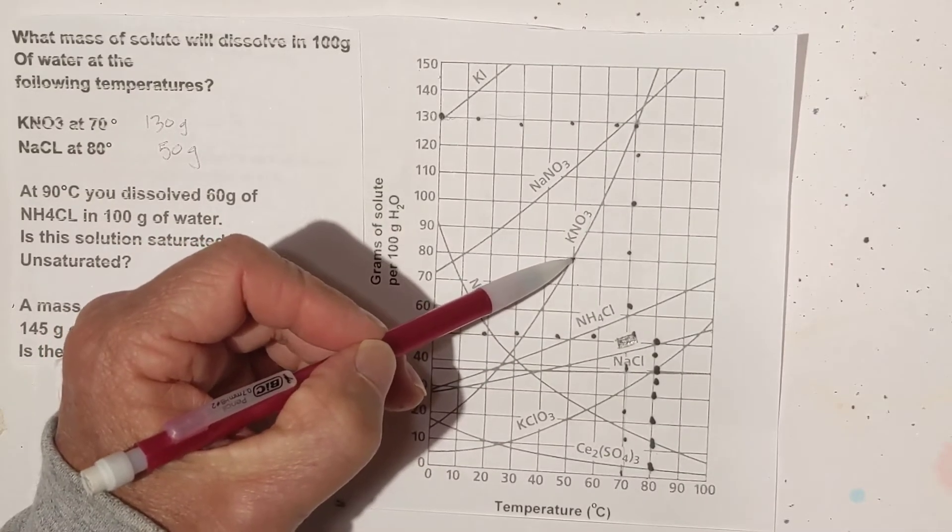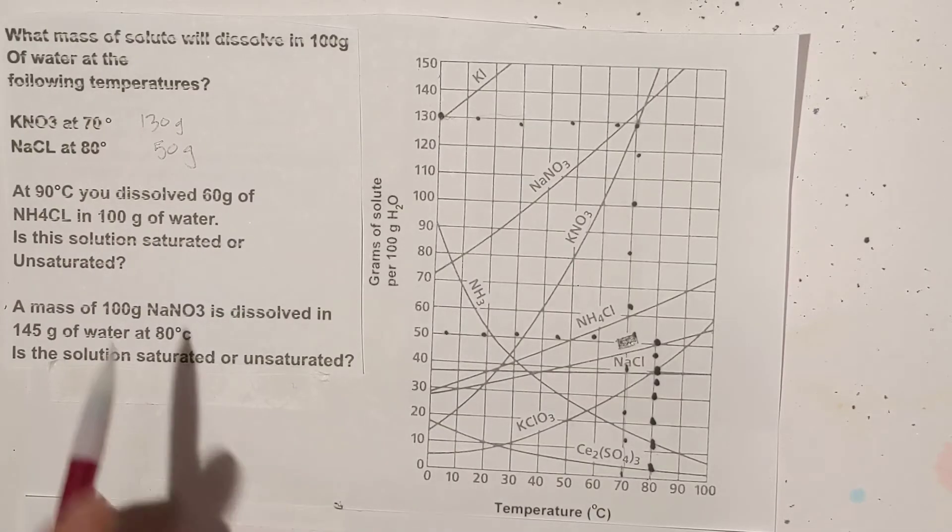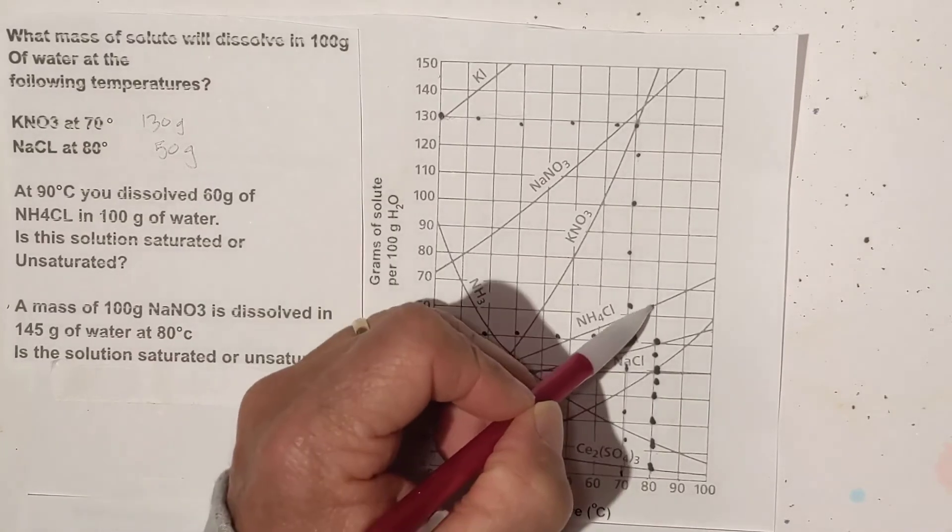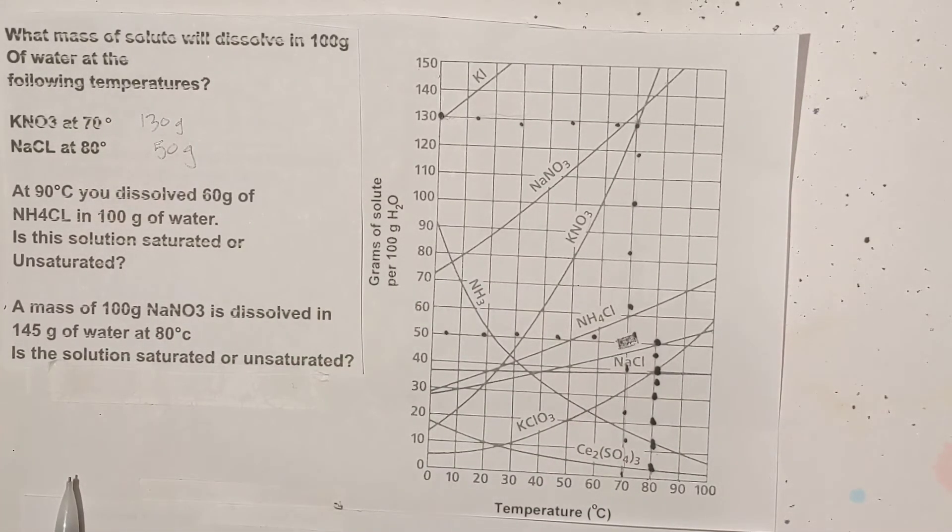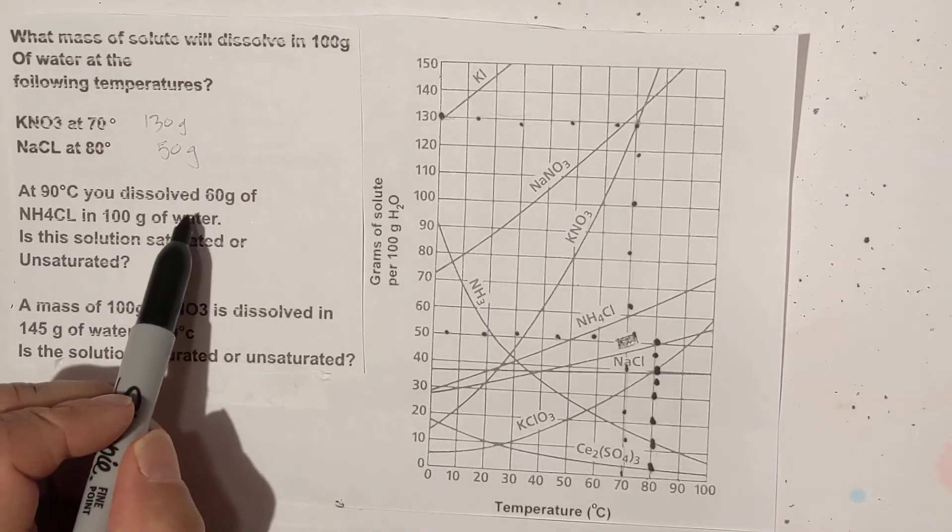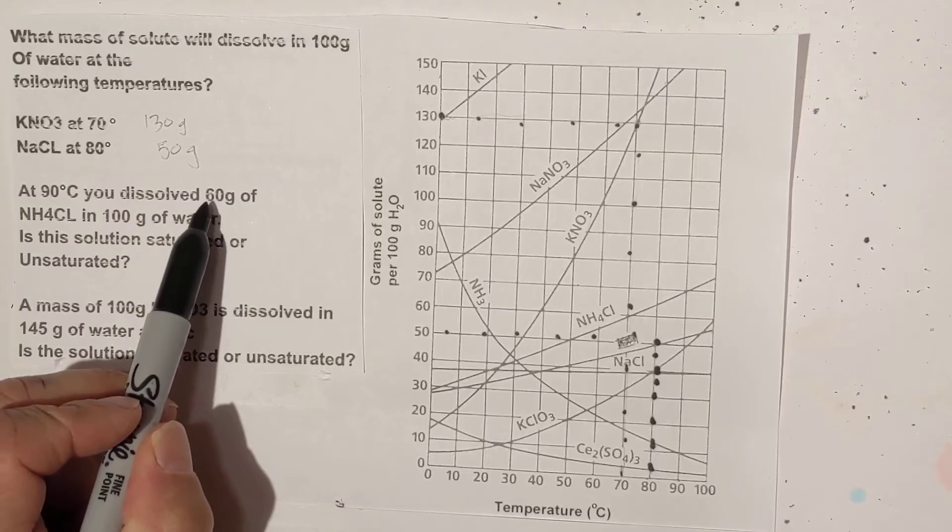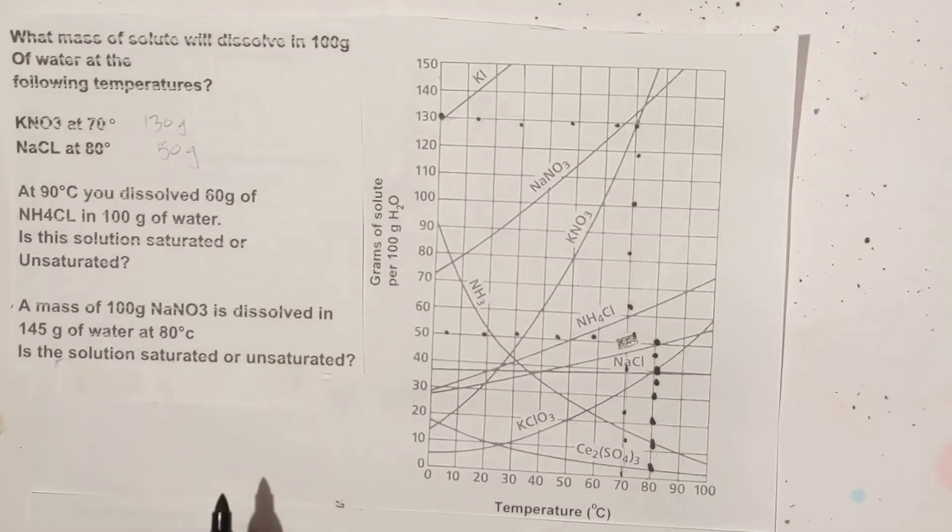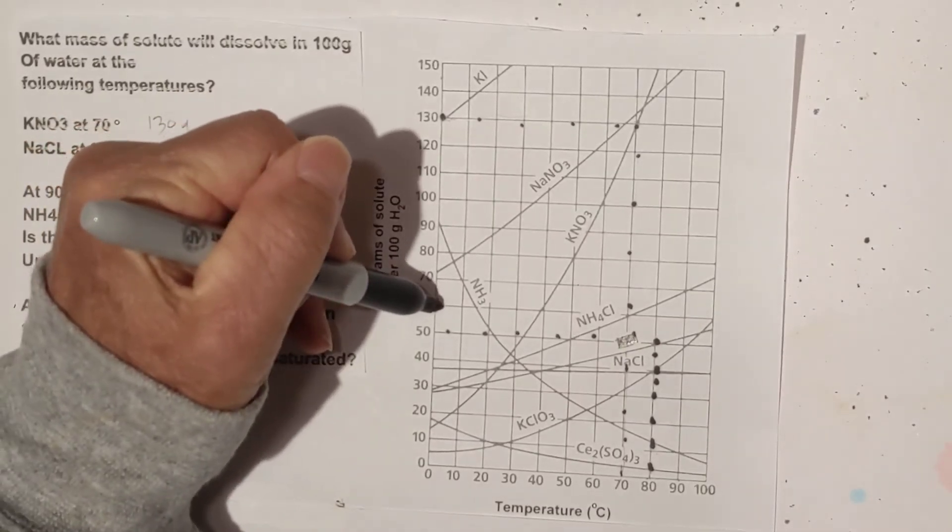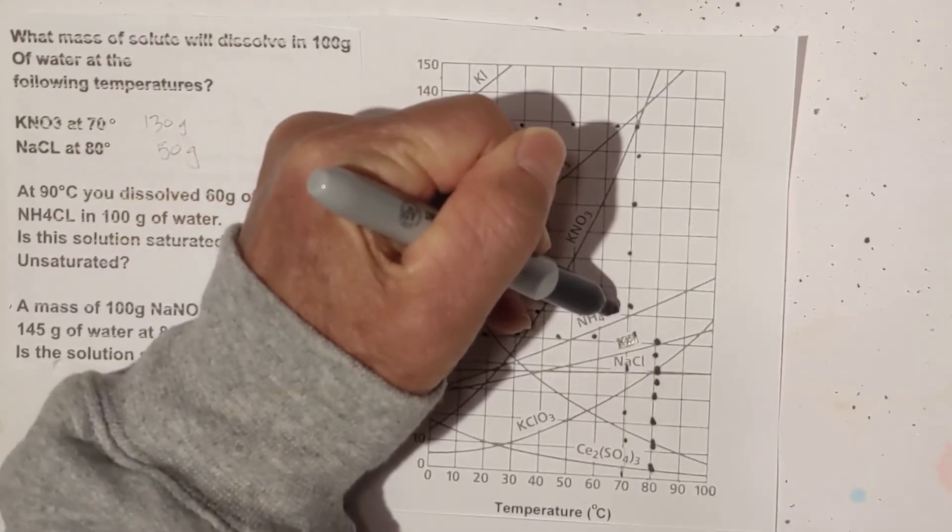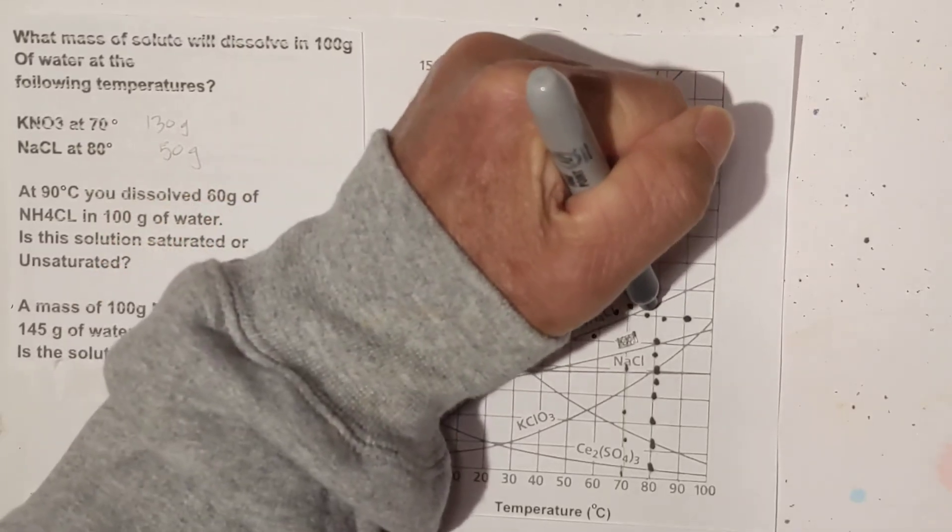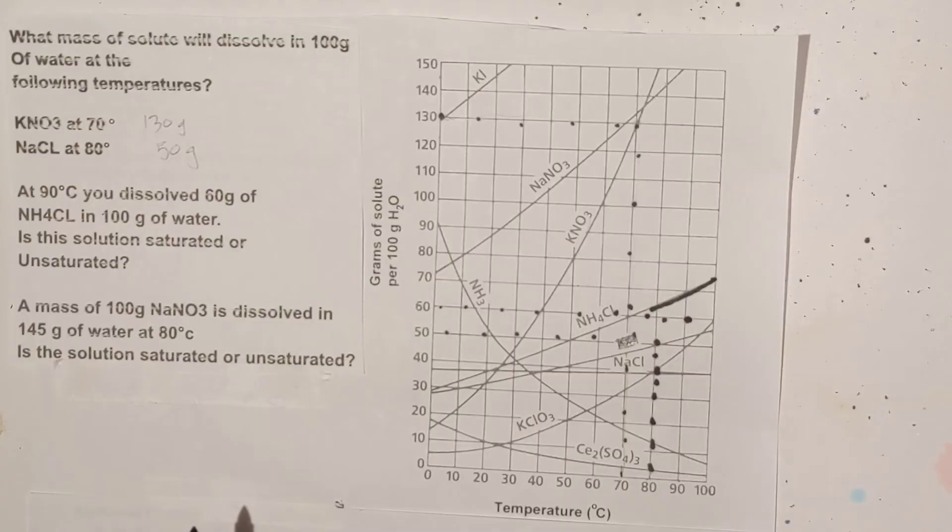Remember if it's on the line it's saturated, below the line it's unsaturated. So we have 90 degrees which is right here, we have NH4Cl which is this line. I'm going to go to the amount we have, 60 grams, so let's move over to 60 grams and remember I have to go all the way over to 90 degrees which is right here. If you'll notice the solubility line is right there, so it is underneath, so it would be unsaturated.